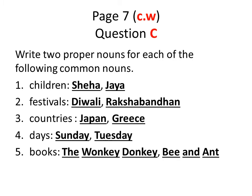On page number 7, the question says: write two proper nouns for each of the following common nouns. The common nouns listed are: children, festivals, countries, days, and books. All of these are definitely common nouns because we don't know which specific ones are being referred to. Notice that the first letter of the common nouns are in small letters.